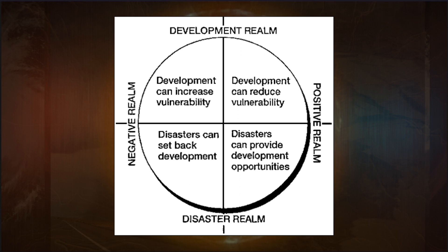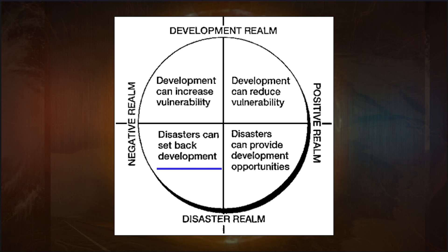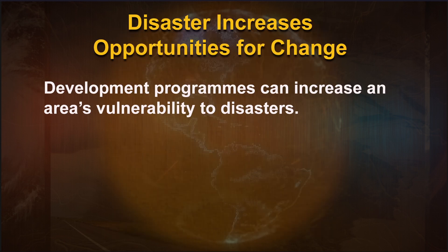A diagram depicts four domains underlying development and vulnerability relationships in connection with natural calamities: the development realm, the negative realm, the positive realm, and the disaster realm. Development can increase vulnerability, development can reduce vulnerability, disasters can set back development, and disasters can provide development opportunities. Development programs can increase an area's vulnerability to disasters.